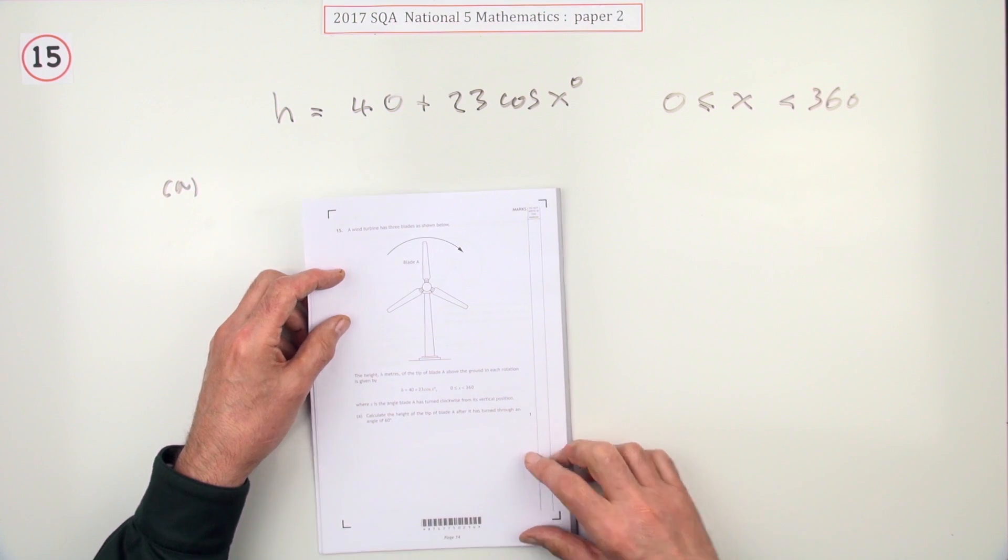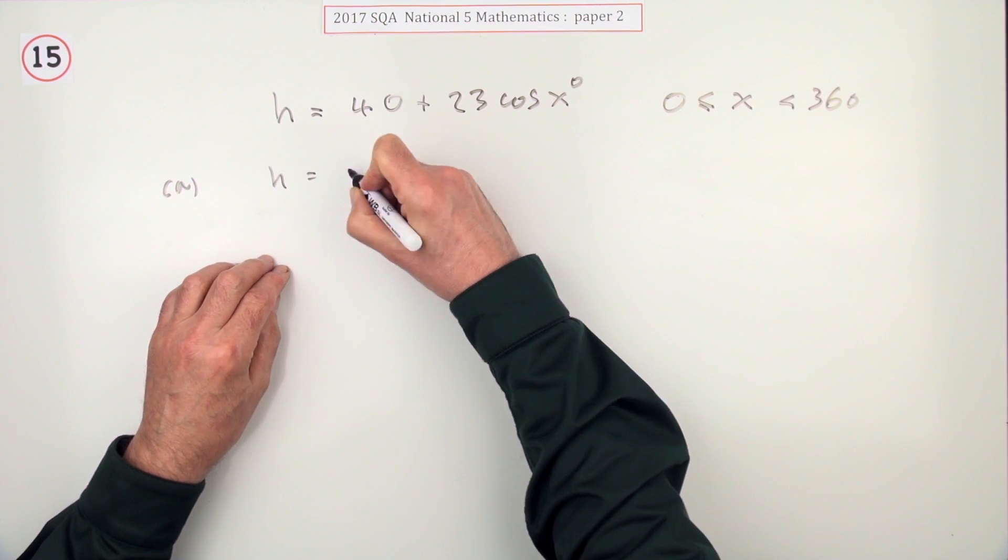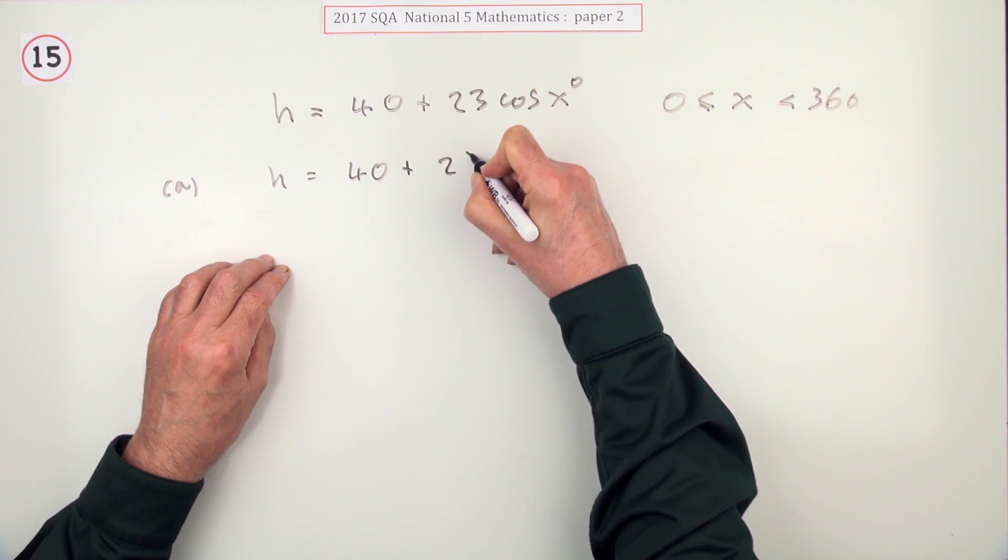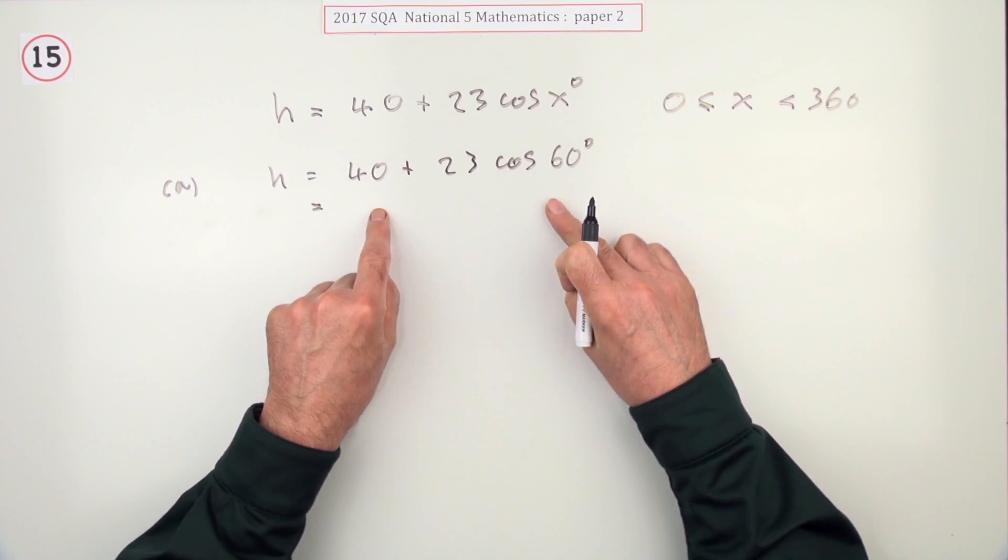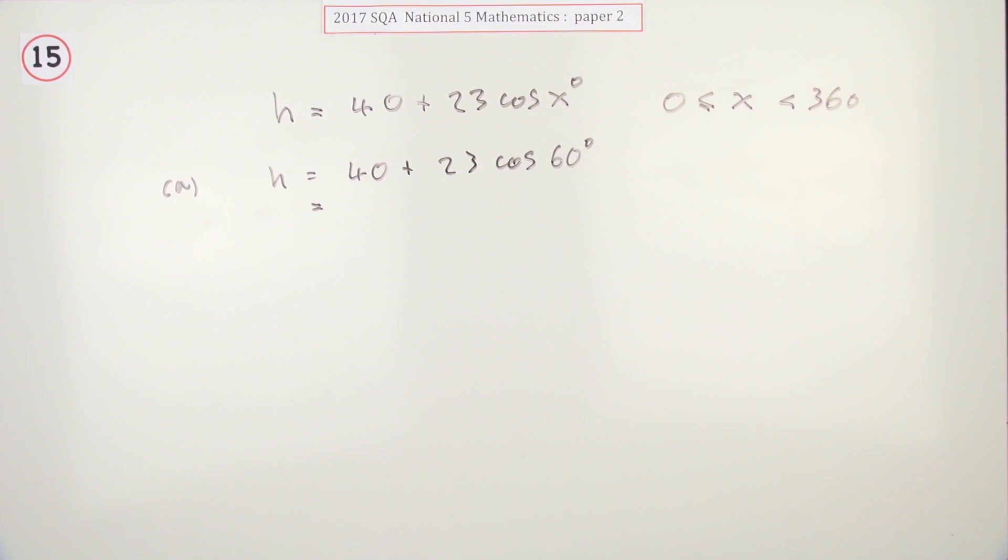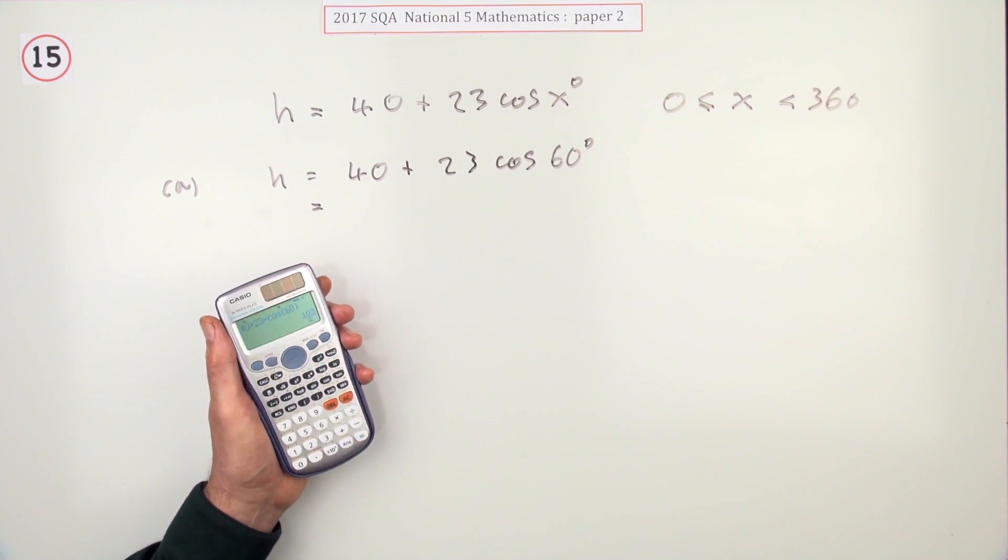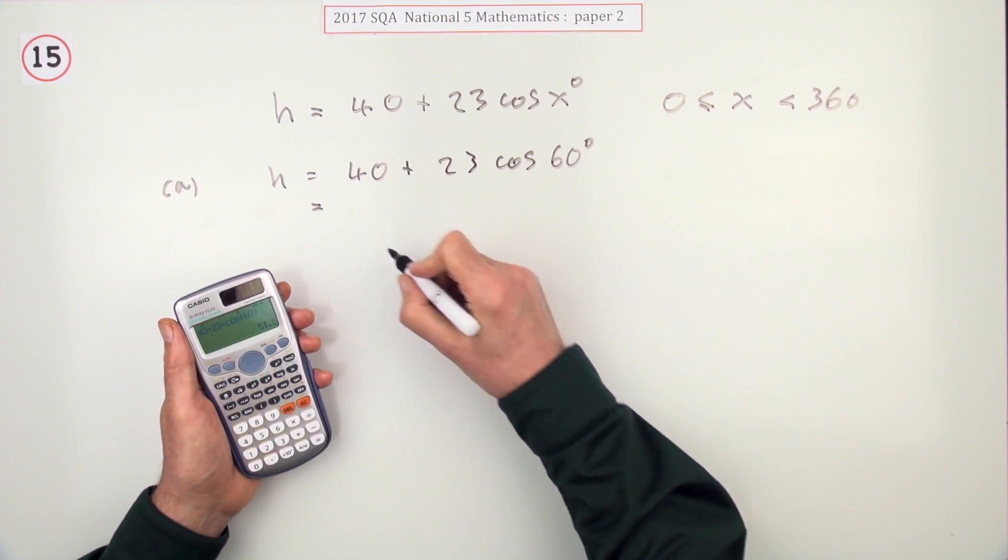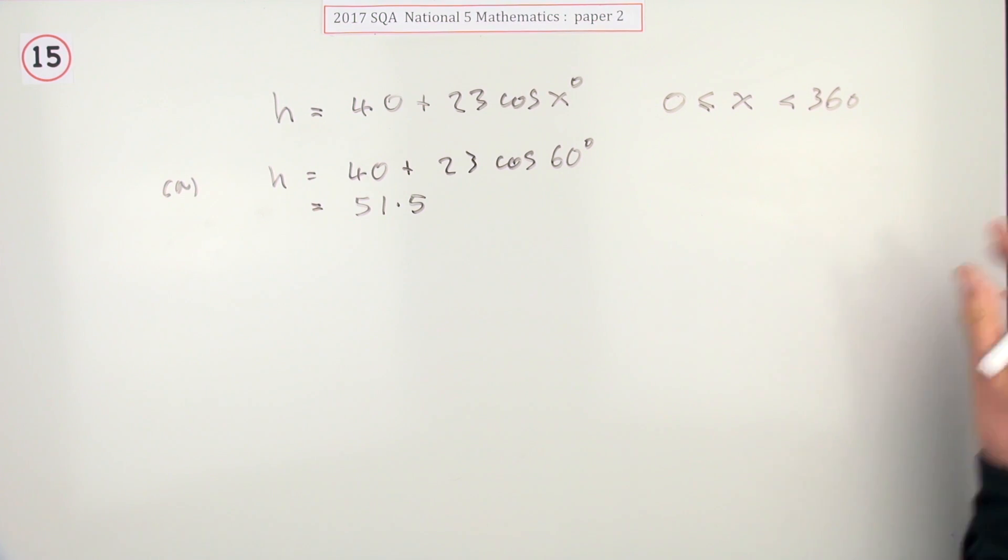So you just see this - well, h is going to be 40 plus 23 cos, and you're going to put a 60 in. Presumably it's just one mark because all you do is put in 60 and press the buttons. And if you type it in exactly as it's written and press the button, you get 51.5 meters.